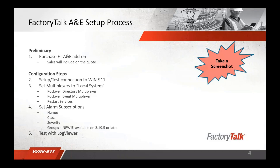First, you will set up and test the connection to WIN 9-1-1. Next, configure the Rockwell Directory Multiplexer, Rockwell Alarm Multiplexer, and Rockwell Event Multiplexer — both should be set to local system — then restart services. This part is sometimes forgotten, and without the multiplexers you will not receive alarms. To bring alarms into WIN 9-1-1, you create alarm subscriptions. WIN 9-1-1 will look at FTAE and check for certain names, classes, severities, and groups.